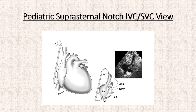This is another suprasternal notch view — a view of the SVC and IVC. You may get a child that has some sort of cardiac mass and they're looking to see if there's impingement on the SVC, which can be a significant problem. If the child is a cancer patient, you want to make sure there are no masses impinging on the vessels or the heart itself.